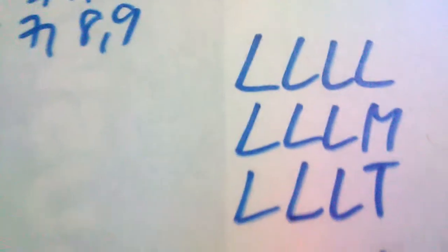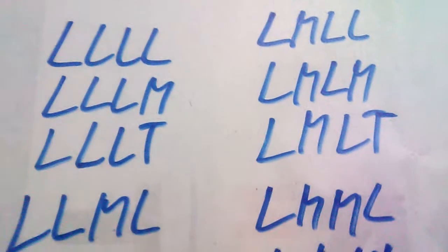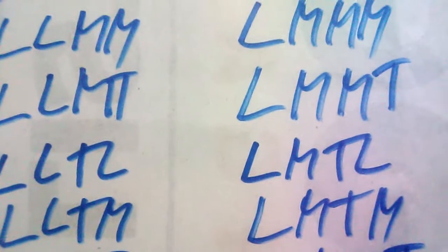Since we have about 81 classifications of number combinations for LMT, I just want to read through the classifications for low numbers. For example: low-low-low-low; low-low-low-middle; low-low-low-top; low-top-low-low; low-top-low-middle; low-top-low-top; low-top-middle-low; low-top-middle-middle; low-top-middle-top; low-top-top-low; low-top-top-middle; and low-top-top-top, among others.